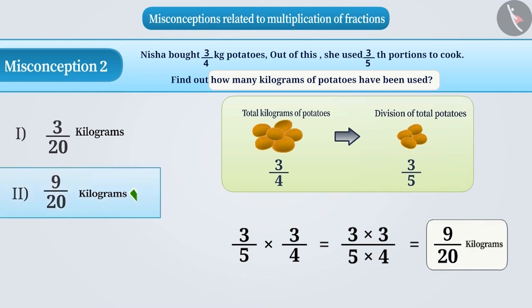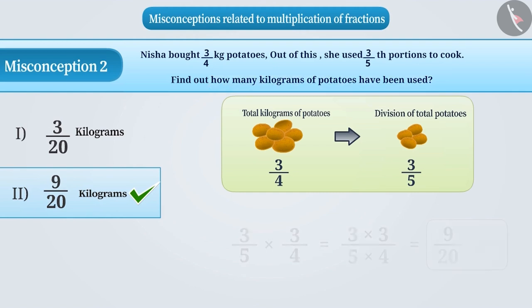That is, option 2 is the correct answer to the question. Some children are unable to understand the question given. They believe that in order to find out how many kilograms of potatoes did Nisha cook, they have to subtract 3 fifth from 3 fourth.